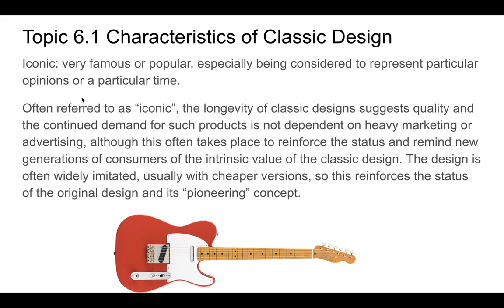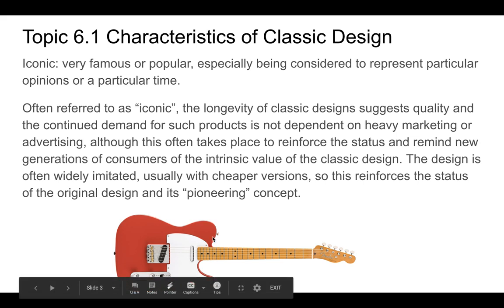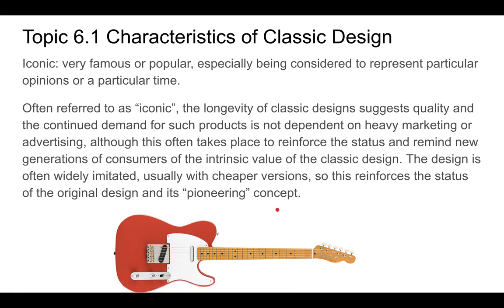When talking about a classic design, we're talking about something that is iconic — very famous and popular, especially representing a particular time or opinion. It also has longevity, meaning it's been around a long time. For instance, the Telecaster electric guitar has been around since the 1950s and is virtually unchanged, giving it a large degree of longevity.